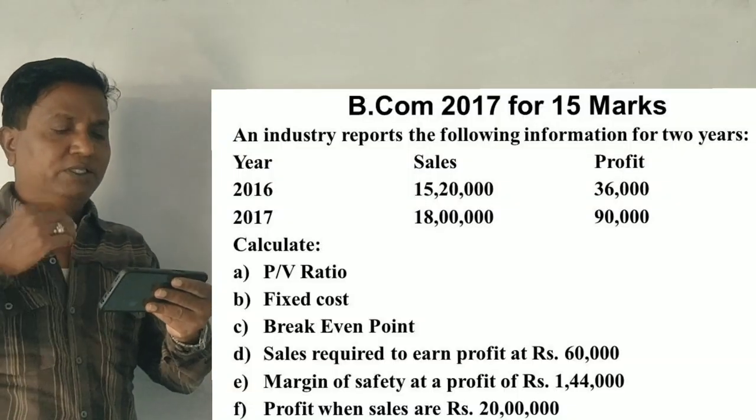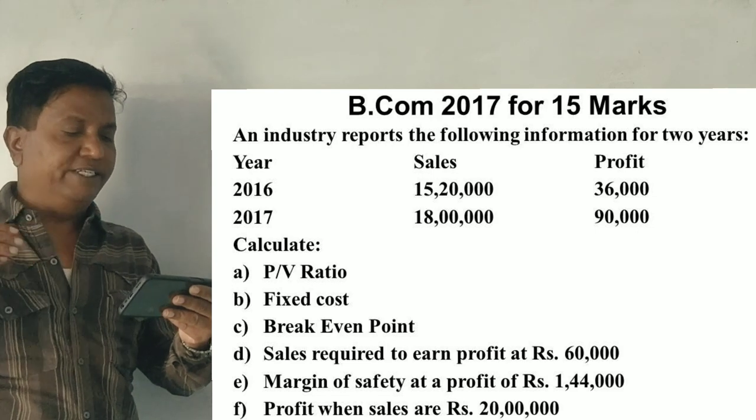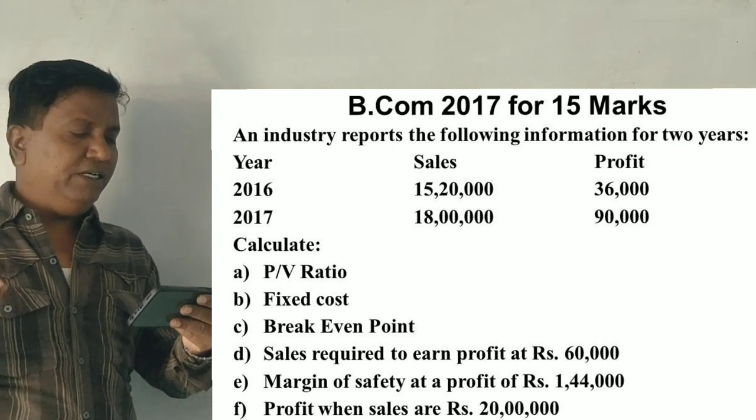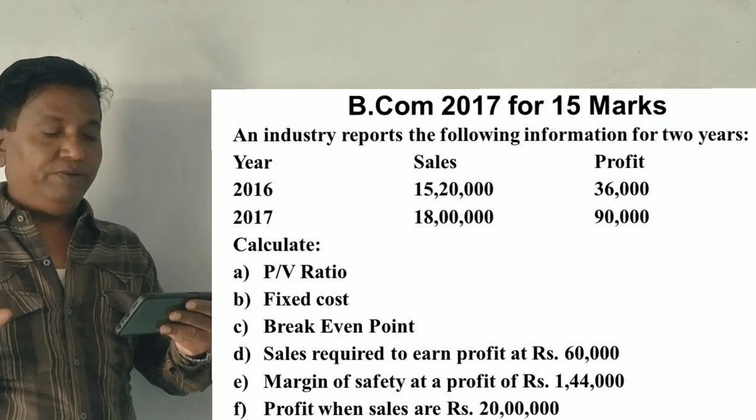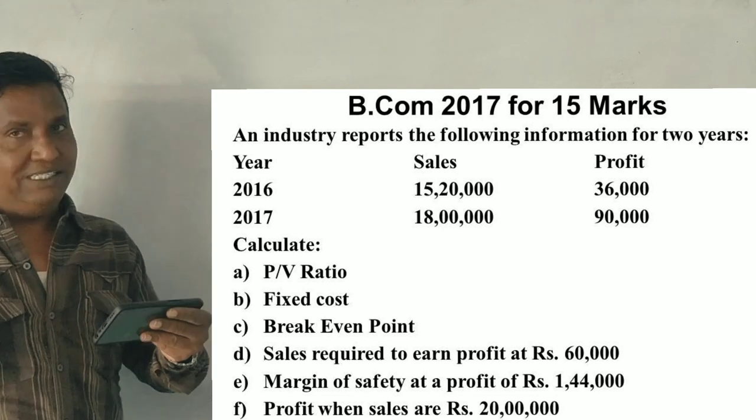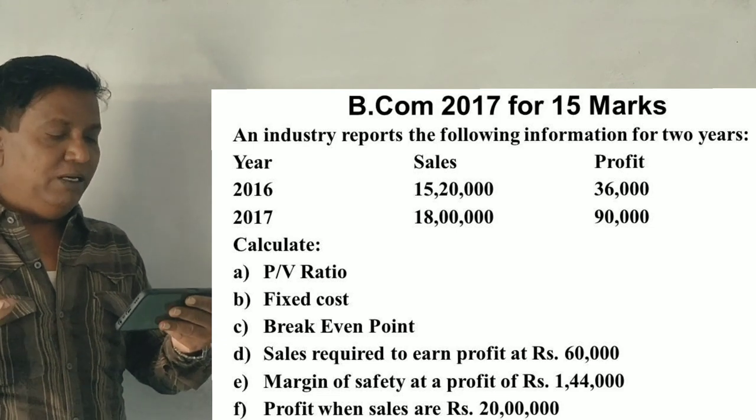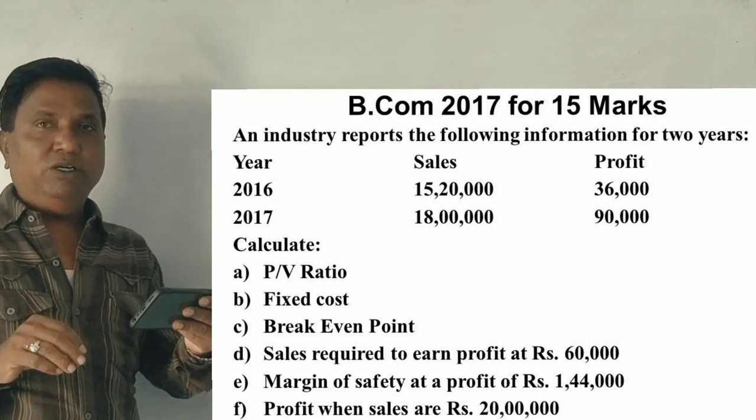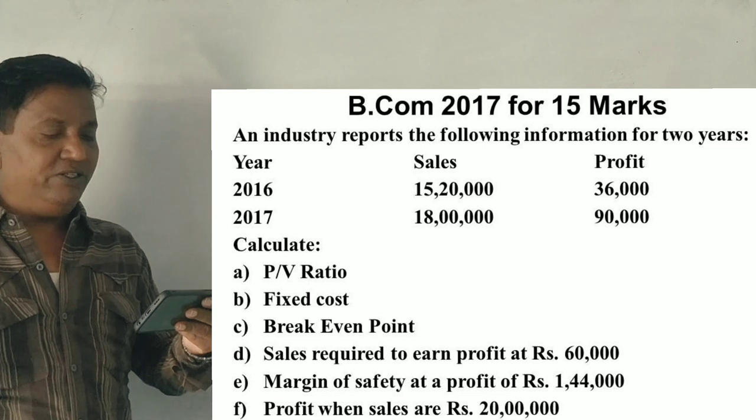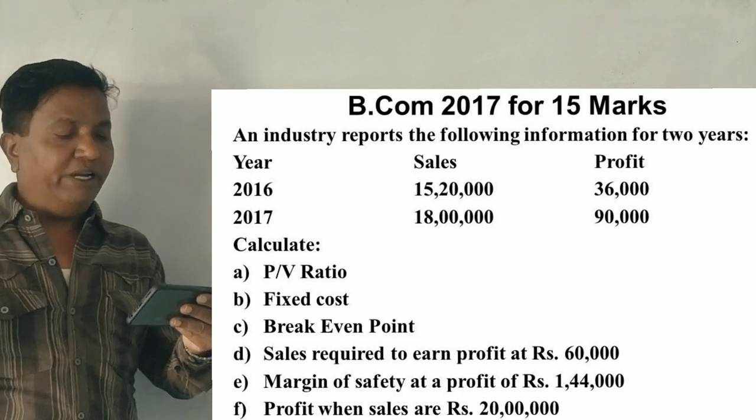An industry reports the following information for two consecutive years, a particular sales profit 2016-2017. 2016 sales is 16,20,000, profit is 36,000. 2017 sales is 18,00,000, profit is 90,000.